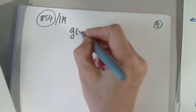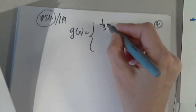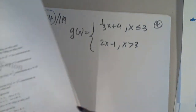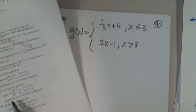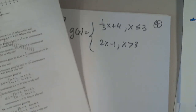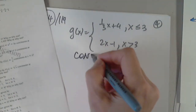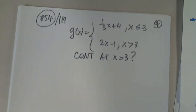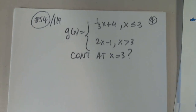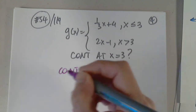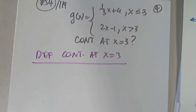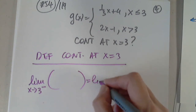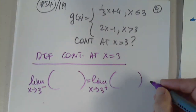We have a function — it's a piecewise defined function. One-third x plus 4 for x less than or equal to 3, and 2x minus 1 for x greater than 3. Is it continuous at x equals 3? Why or why not? All I have to do is state the definition of continuity at x equals 3: the limit as x approaches 3 from the left must equal the limit as x approaches 3 from the right, and both must equal f of 3.